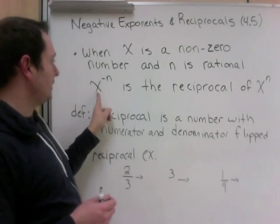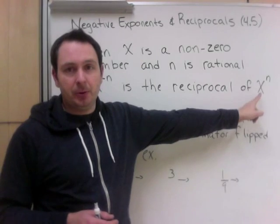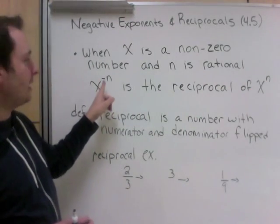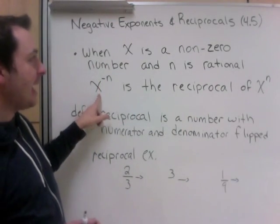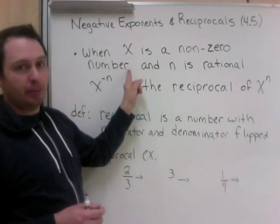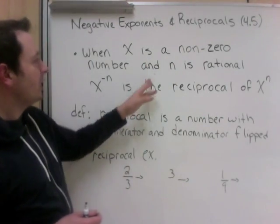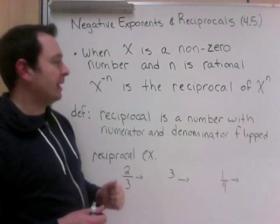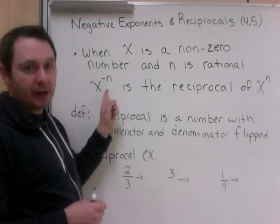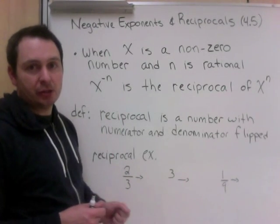So here's an example of x and x, they both have an exponent. One has an exponent n, the other has an exponent negative n. So when this x is a non-zero number, meaning it will not work for zero, and n is rational. Rational means that it's either a fraction or it is a decimal that stops or repeats.